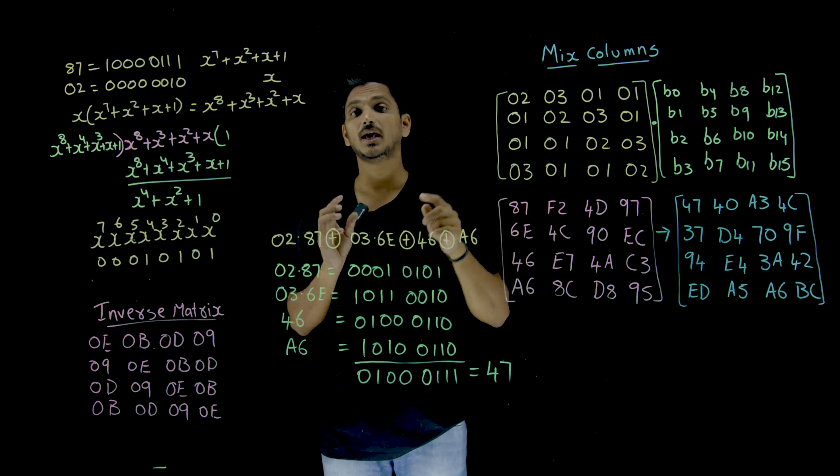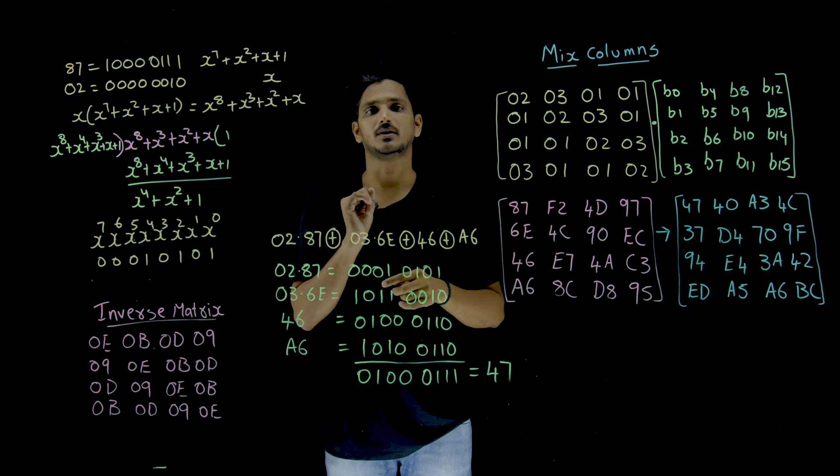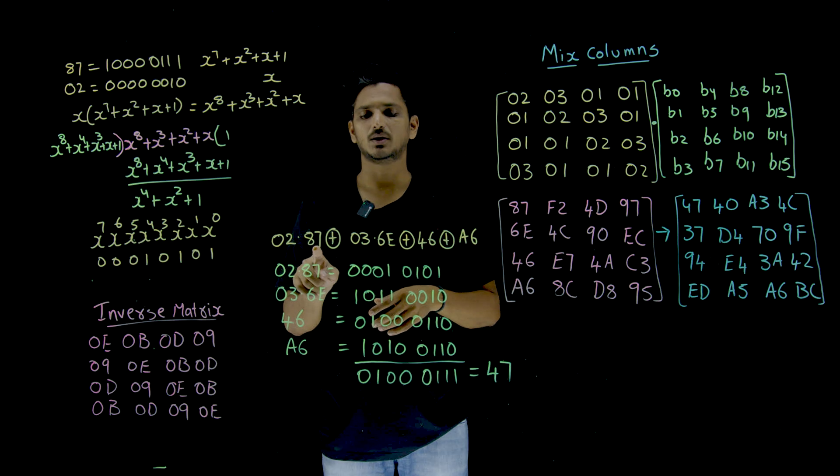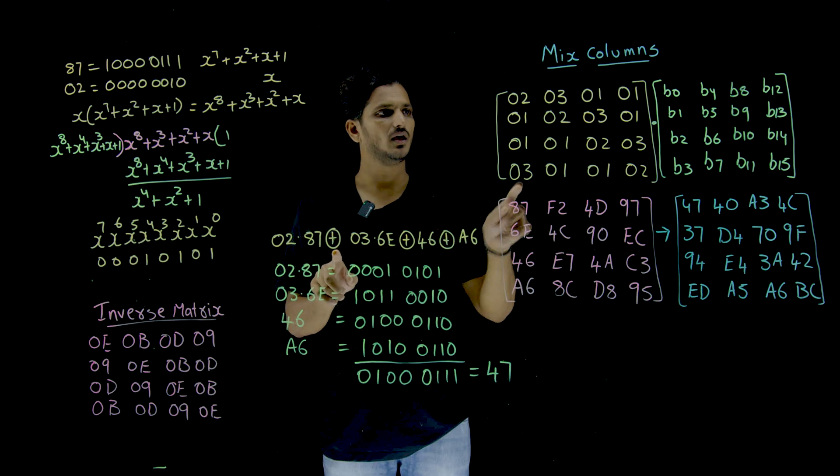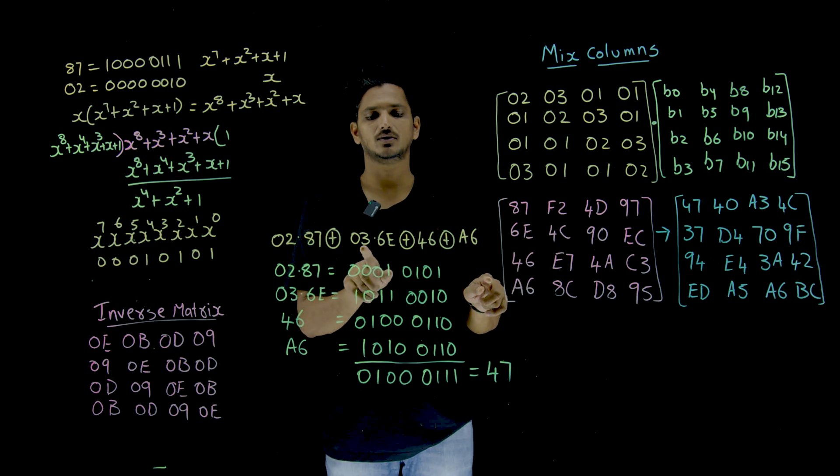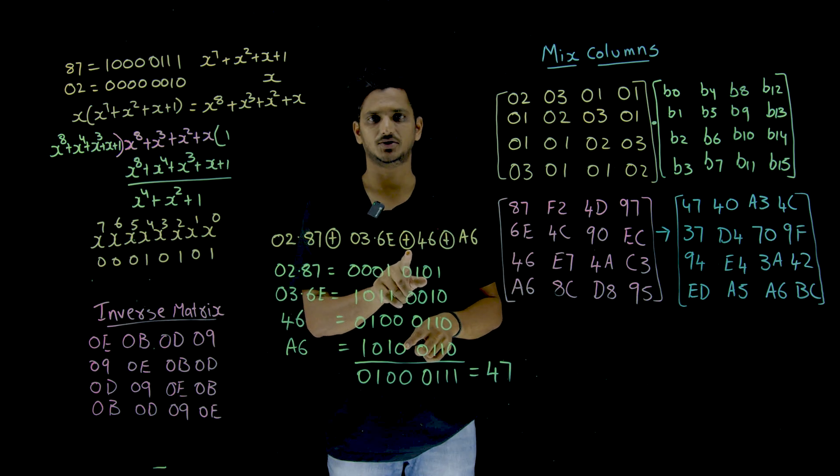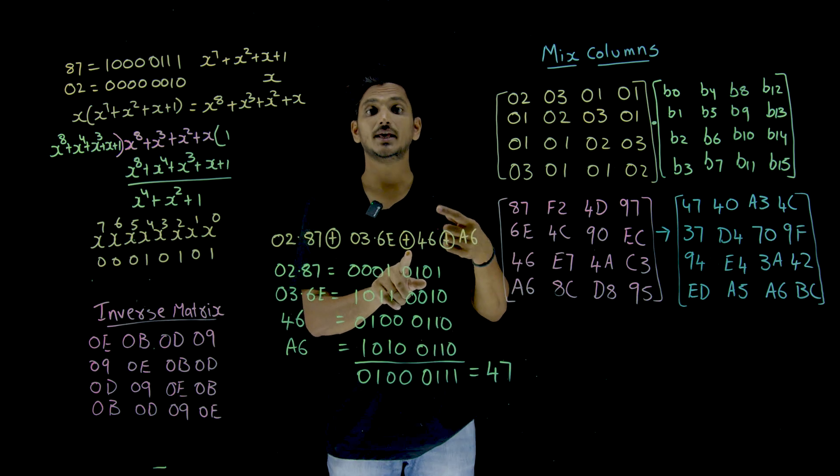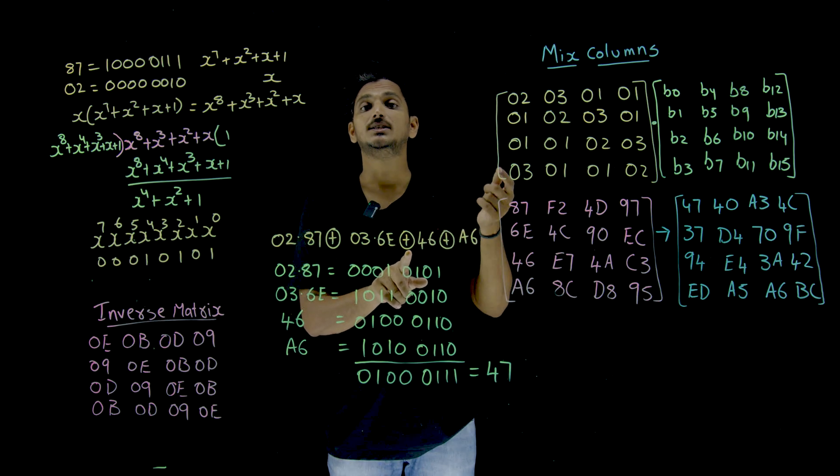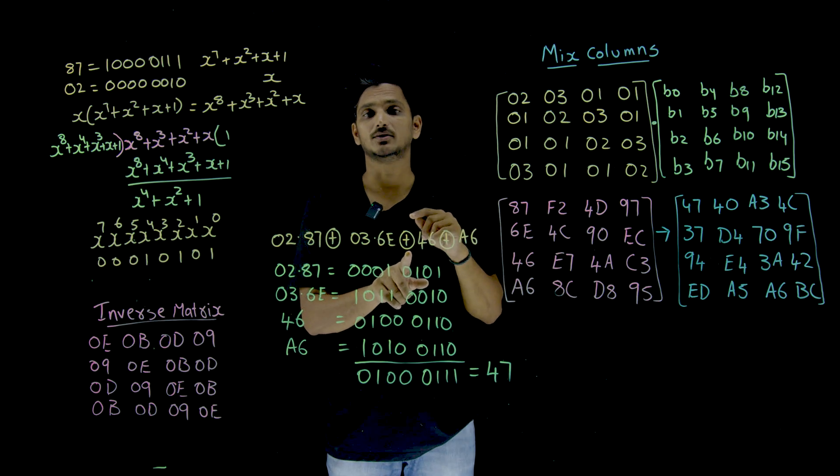Here 02 means it is a hexadecimal number. 87 is also hexadecimal number. So 02 multiplied by 87, addition. 03 multiplied by 6e, addition. Here addition means XOR operation. We have to go with GF of 2 power 8 XOR operation, addition operation, means XOR. Here multiplication means GF of 2 power 8 multiplication.